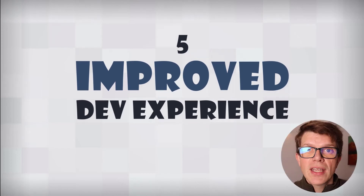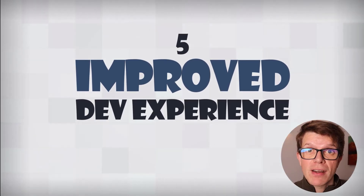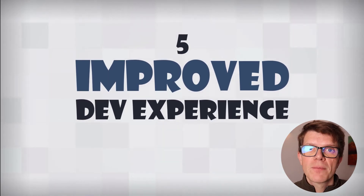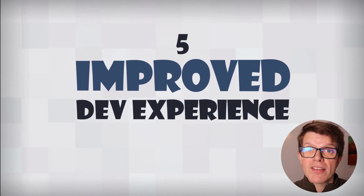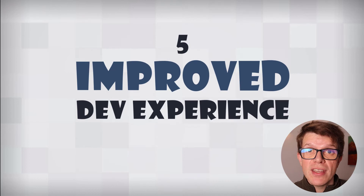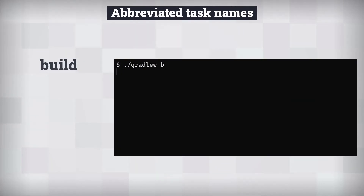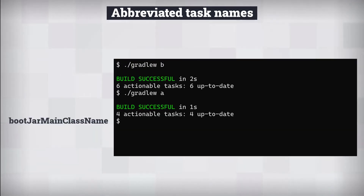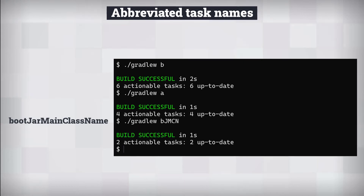Using Gradle gives developers an improved experience over Maven in day-to-day work. On top of what we've already discussed, there are neat features in the Gradle command line. For example, you can use abbreviated task names — shortening 'build' to 'b', 'assemble' to 'a', or 'bootJarMainClassName' to 'b j m c n'. Just give enough of the task name so that it's unique.